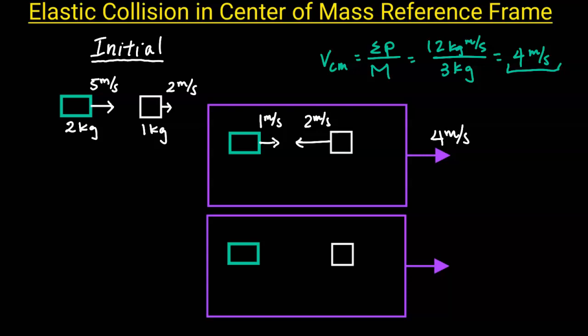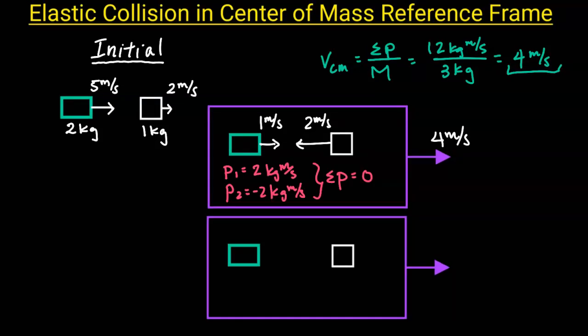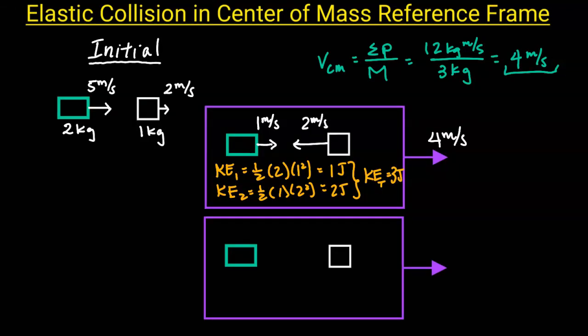When the two objects collide in the center of mass reference frame, both momentum and kinetic energy have to be conserved. When we calculate their momentum in the center of mass reference frame, we find that object 1 has a momentum of 2 kilograms meters per second, and object 2 has a momentum of negative 2 kilograms meters per second. So the total or net momentum here is 0. And when we calculate their kinetic energies, we find that object 1 has a kinetic energy of 1 joule and object 2 has a kinetic energy of 2 joules, and their total kinetic energy is 3 joules.